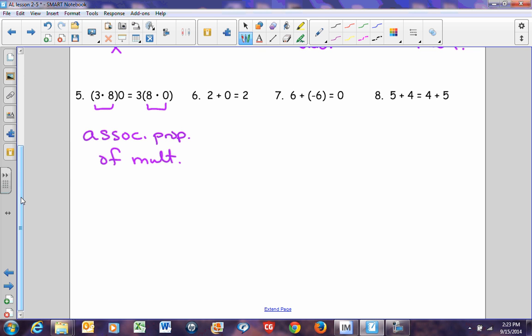Number 6, 2 plus 0 equals 2. Notice we had a 0 on the left-hand side. We don't have a 0 on the right-hand side. So that has to be the additive identity. Or the identity property of addition. It doesn't really matter how you say that.